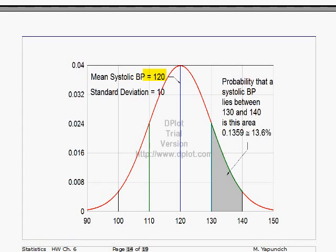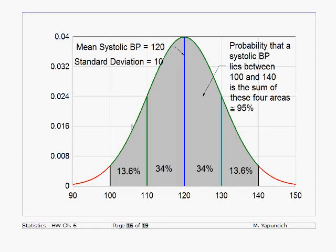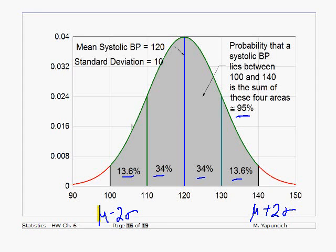Here's the same curve — mean of 120, standard deviation of 10. If you want to know the probability of blood pressure lying between 130 and 140, that's mu plus one sigma to mu plus two standard deviations. Since that's a well-known area, you can just quote the result: it's 13.6%. If you go over several of those well-known areas, you just add them up. For mean minus two sigma to mean plus two sigma, you add 13.6, 34, 34, and 13.6, and they total about 95%.